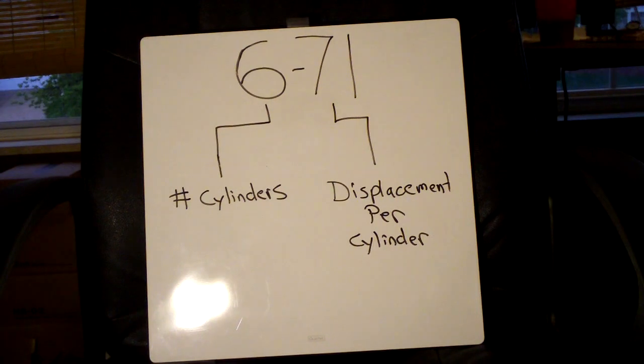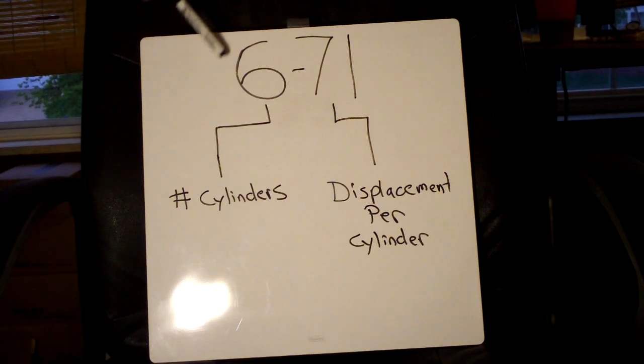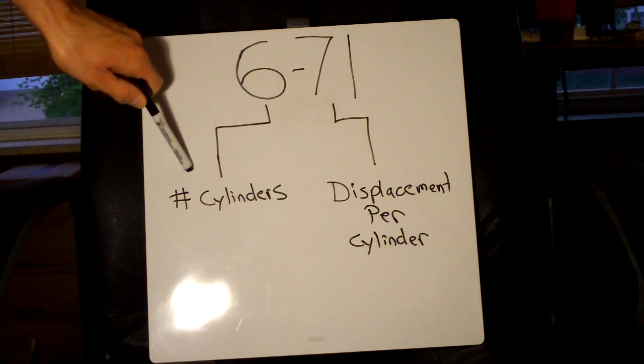All right, the first one I'm going to start out with is the simple series here, and I'm using the 671 as an example. Basically, the first number here is going to denote how many cylinders are in the engine.